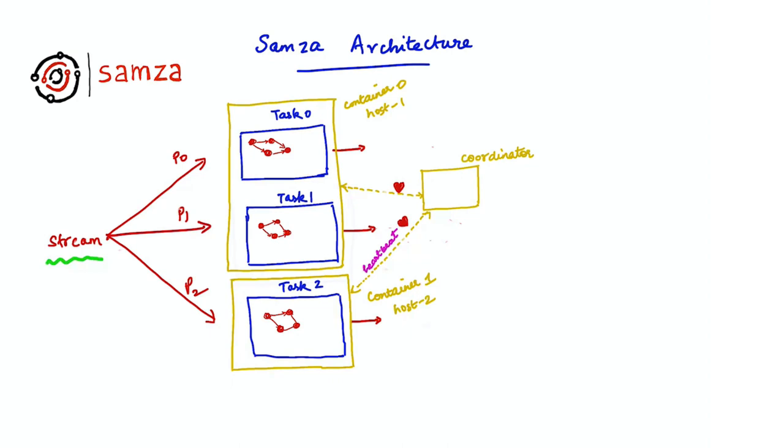Each Samza application also includes a job coordinator that manages the execution of the containers. The coordinator is responsible for assigning tasks across containers and monitors individual containers by means of heartbeats. In case a particular container fails, the coordinator can take actions like restarting that container or redistributing its tasks across the remaining containers.